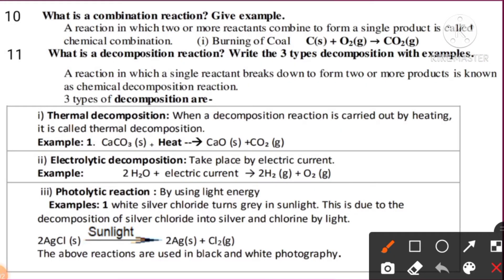Okay, we'll see question number 10. What is a combination reaction? Give examples. A reaction in which two or more reactants combine to form a single product is called a chemical combination. Here's an example: burning of coal. The solid substance of carbon burns with the help of oxygen present in air to give carbon dioxide gas.